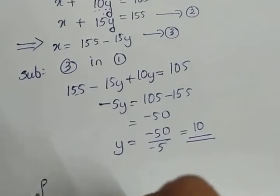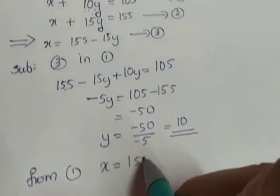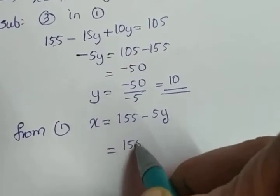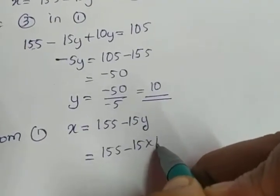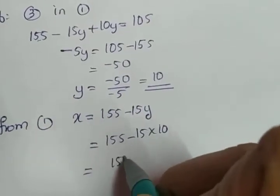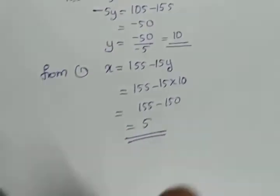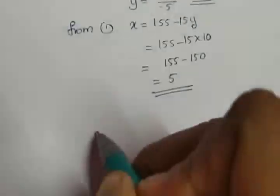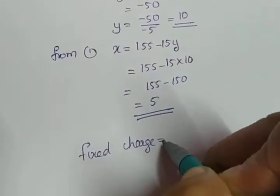To find x, take the first equation. First equation is x is equal to 155 minus 15 into y. So 155 minus 15 into 10. So 155 minus 150, which gives you the value 5. x was the fixed charge, so the fixed charge is equal to 5 rupees.